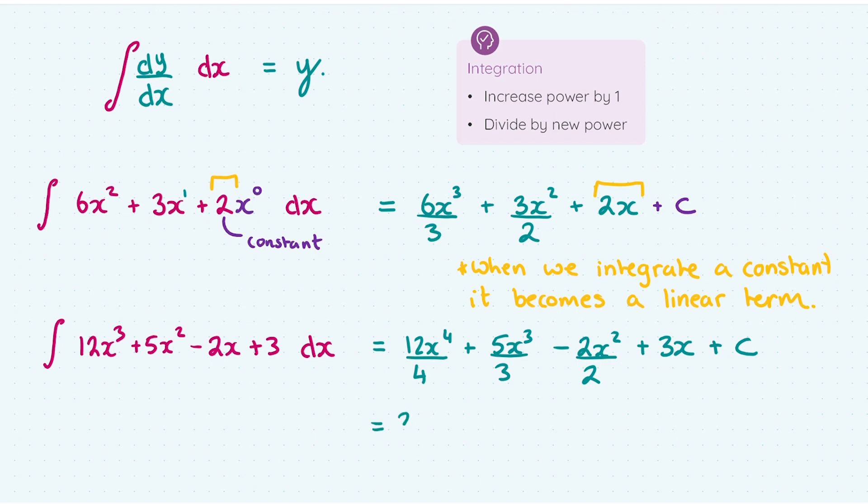And then I'm going to go ahead and tidy up. Can we tidy this function up any further? Well, we can divide some of the numbers. And that's the job done here. So straightforward enough process, folks. What we do is we take our function, we increase the power by one, and we divide by the new power. Let's look at one more.